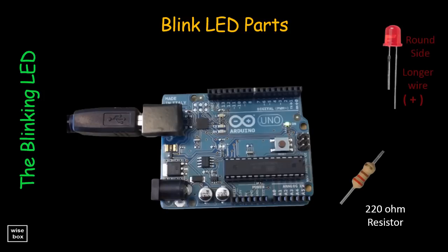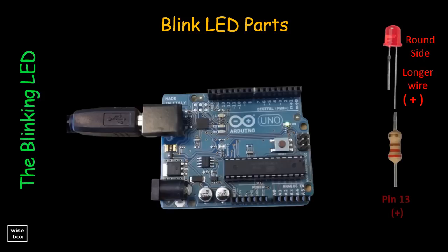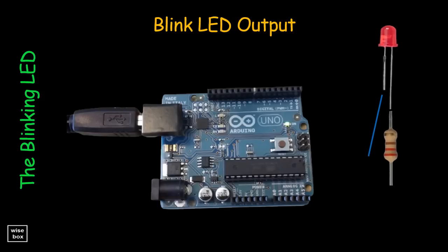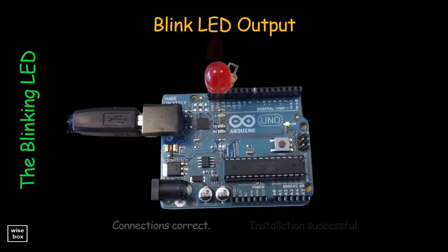Connect the longer LED wire to the resistor, and this goes to pin 13. Then the shorter LED wire goes to the ground pin. When everything is connected properly, and the program was uploaded successfully, the LED bulb will blink every second continuously.